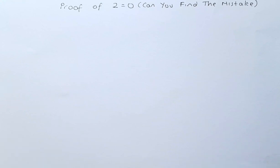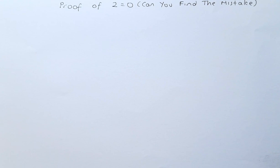Good day! I reckon you have watched many videos on YouTube about the false proof of 2 equal to 0, and I was wondering if you can figure out where the mistake is in this mathematical fallacy. Let's get started with the proof.